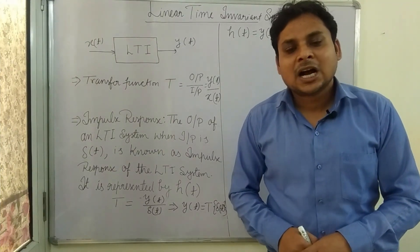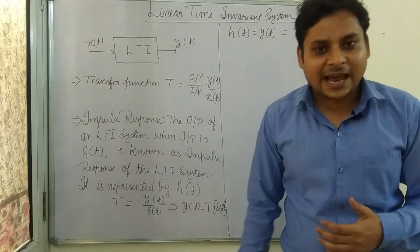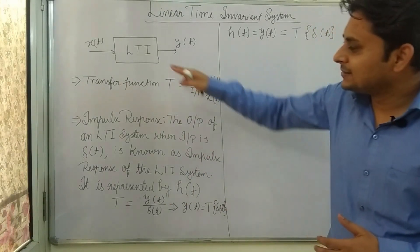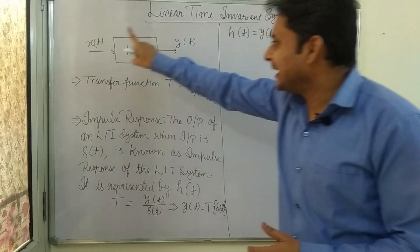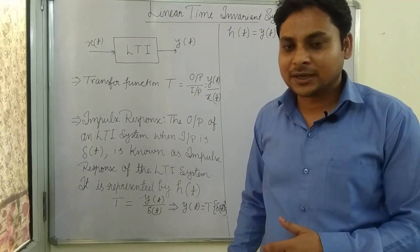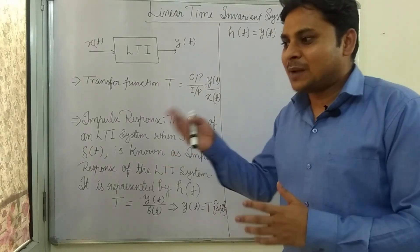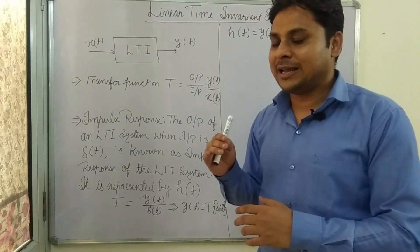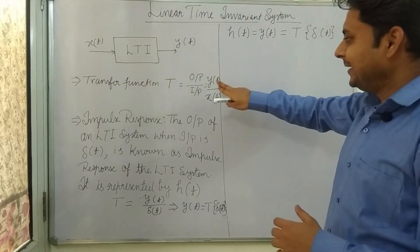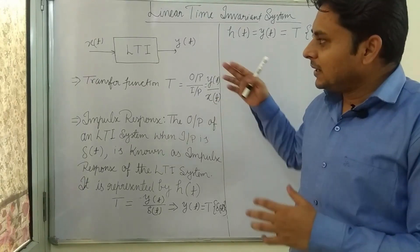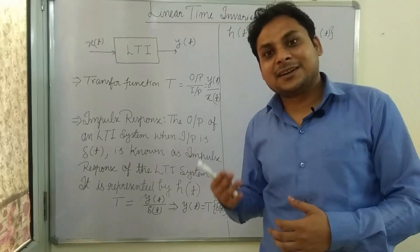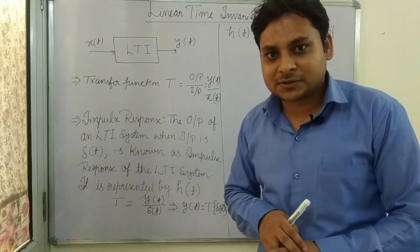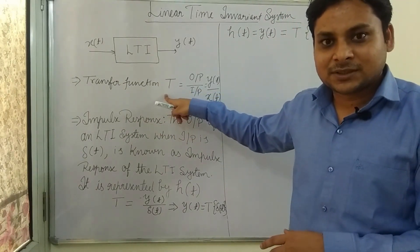Hello students. In this lecture we will study how we will characterize linear time invariant systems and what is convolution and what is its importance in LTI systems. Now, there is a system which has input x(t) and output y(t). This is a linear time invariant system. Generally, we define a system with the help of a transfer function T, which equals output upon input — the ratio of output to input is known as the transfer function.